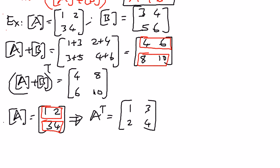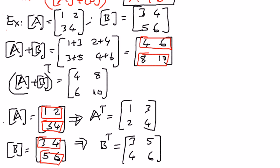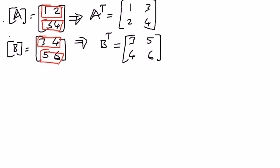Similarly, if B is the matrix 3, 4, 5, 6, then the transpose of B is found by writing its rows as columns, giving 3, 5, 4, 6. This property tells us that adding these two transposes should give our answer.